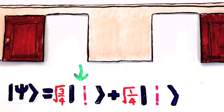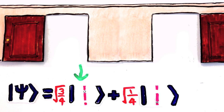In this example, the probability that the particle is measured at the closer door is 3 quarters and the farther door is 1 quarter.